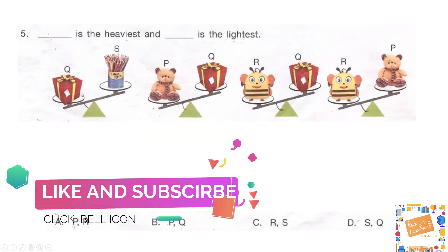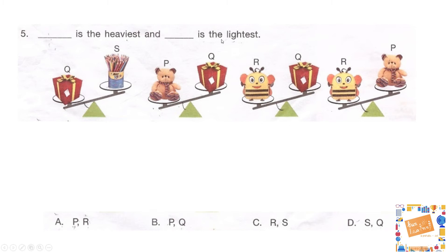Question 5: which is the heaviest and which is the lightest? Four figures are given. The options are: option A — P is heaviest and R is lightest; option B — P is heaviest and Q is lightest; option C — R is heaviest and S is lightest; option D — S is heaviest and Q is lightest. Try to solve it, and then let's approach it together.